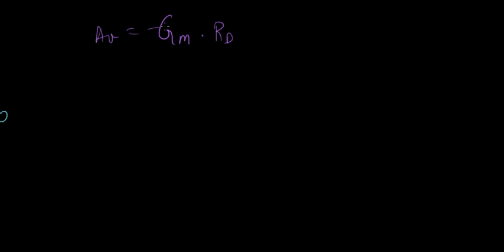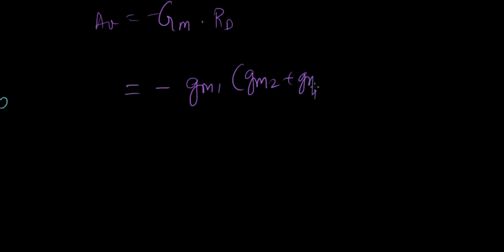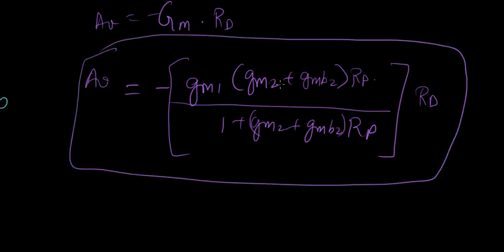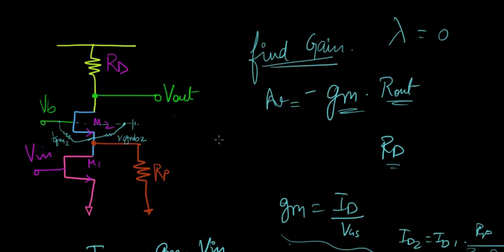What is that GM? What do we have to write now? Just this GM, which is GM1 times GM2 plus GMB2 times RP over one plus GM2 plus GMB2 times RP, the whole times RD. That's all it is, we've got the gain. Now if you look at this gain equation, this big gain equation, all this is, this is just the GM of the input system and this is the output resistance. Let's go back to the circuit and actually analyze if there were different combinations.